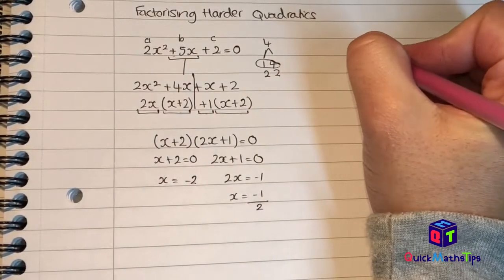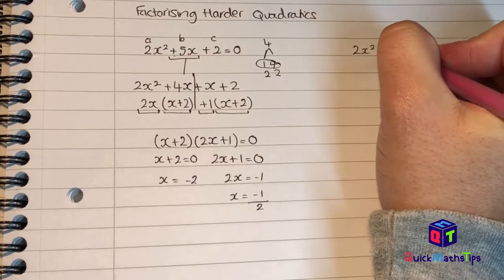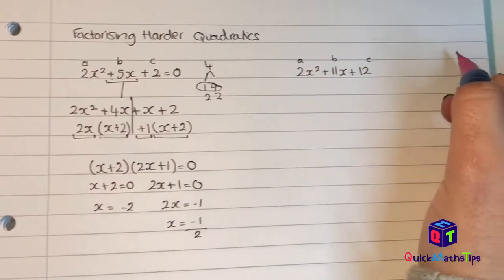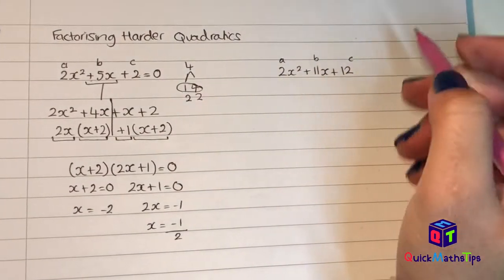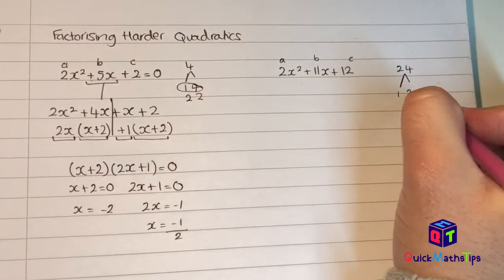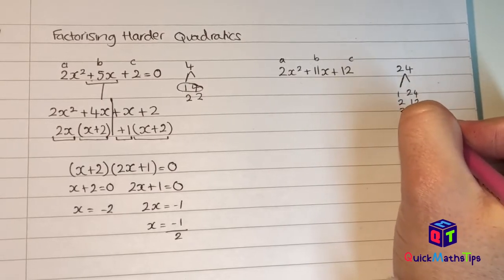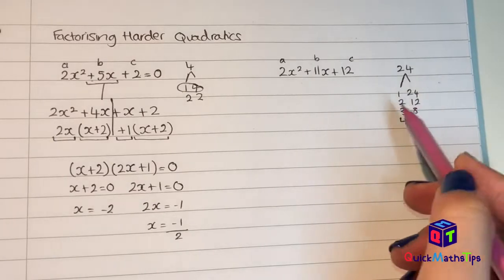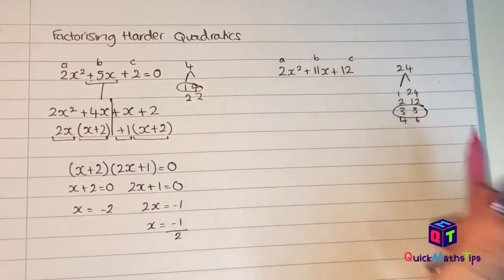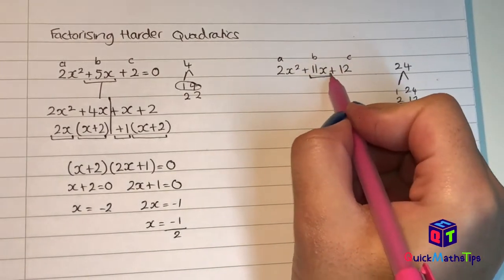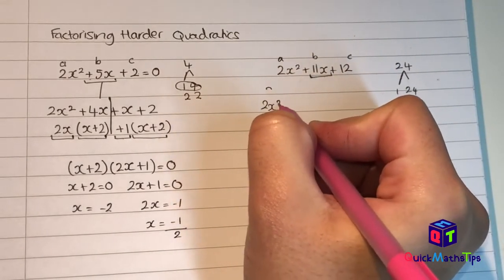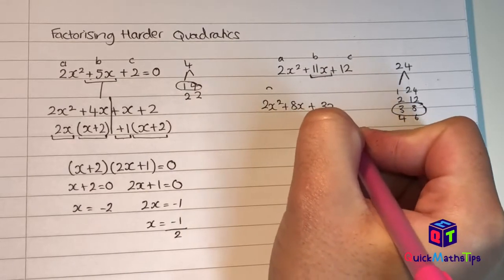Let's do another example: 2x² + 11x + 12. This is my a value, this is my b value, and this is my c value. I'm going to multiply my a and my c: 2 × 12 = 24. The factors of 24 are 1 and 24, 2 and 12, 3 and 8, 4 and 6. The pair that adds to give me 11 is 3 and 8. So I split 11x into 3x and 8x, giving 2x² + 8x + 3x + 12.